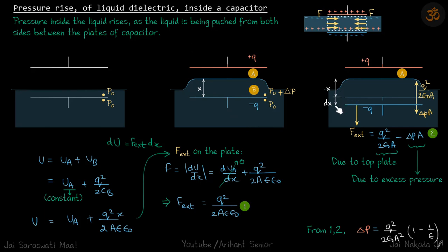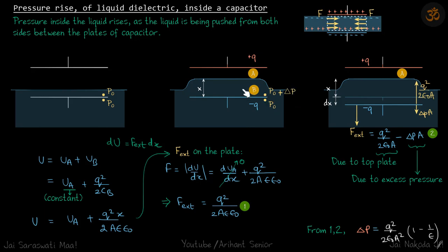We move the bottom plate slowly by a small distance dx, keeping the forces balanced. So f_external equals the other forces on the plate. One force is due to the plus q charge pulling the plate up, which is q²/(2ε₀A) — a standard result. This force between plus q and minus q has nothing to do with the dielectric. The plate is also pushed down by the excess pressure delta_p, giving a force delta_p times A.